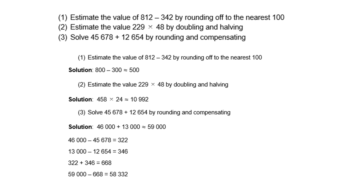Estimate the value of 229 times 48 by doubling and halving. We double 229 to get 458 and halve 48 to get 24. So we multiply 458 times 24, and the answer is 10,992.